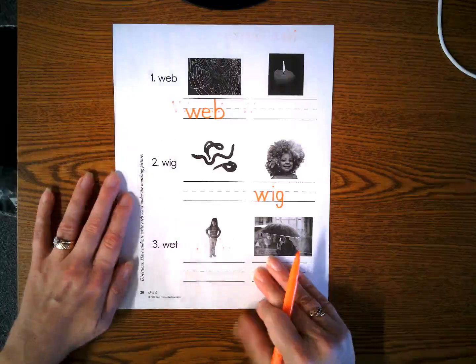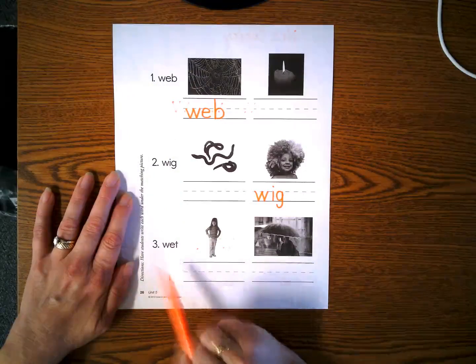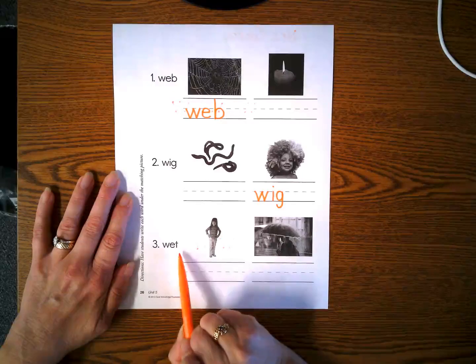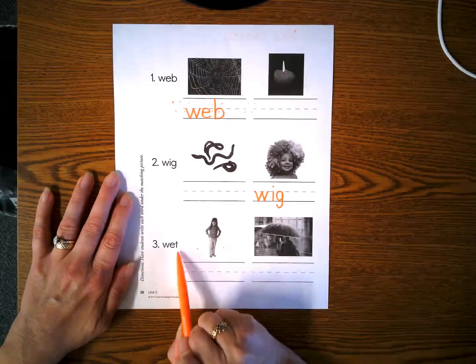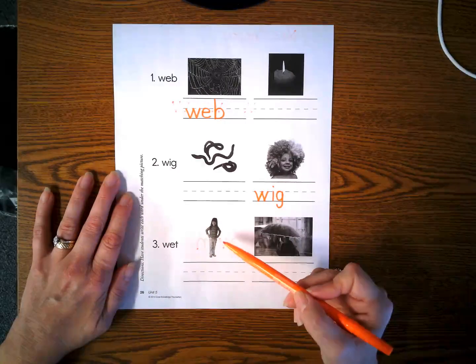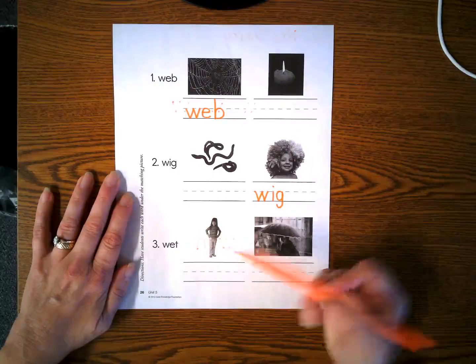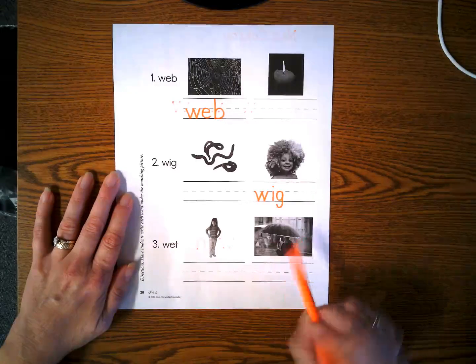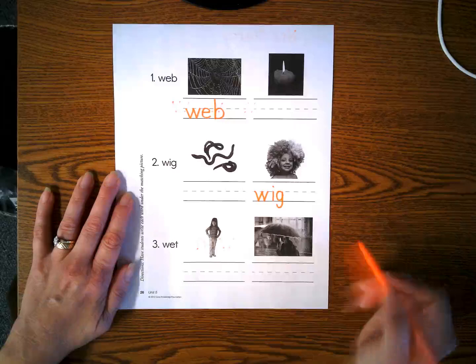And now our last word. Let's stretch it. Number three. W, e, t. Wet. Well, this looks like a little girl. That doesn't look like wet. Oh, this picture does. I see an umbrella, and I see lots of rain. Wet.